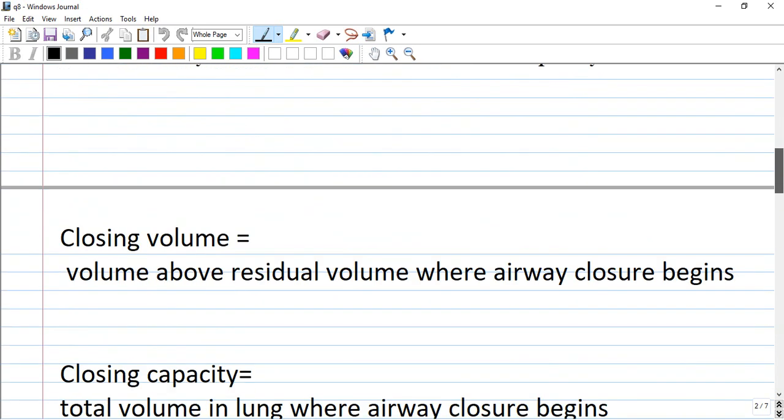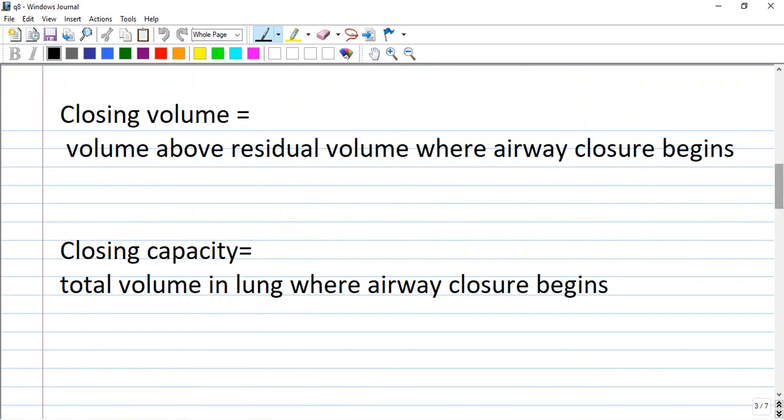Let us look at many facts and you can make notes on your paper regarding this. So closing volume equals volume above residual volume where airway closure begins. And closing capacity is total volume in lung where airway closure begins.